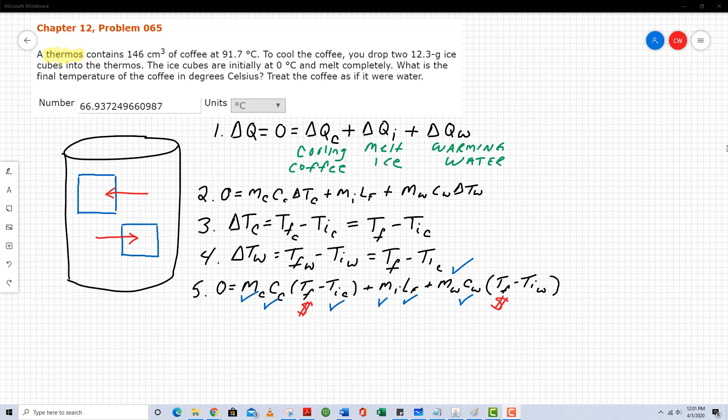And remember, there's two ice cubes. Each ice cube has a mass of 12.3 grams. So my total mass of ice is 24.6, but I have to convert that to kilograms. And I, again, know the specific heat capacity of water. So at this point, I just need to isolate the variable called T subscript F and solve.